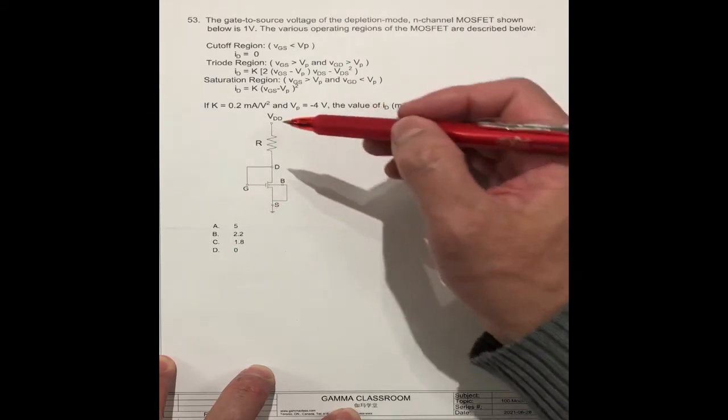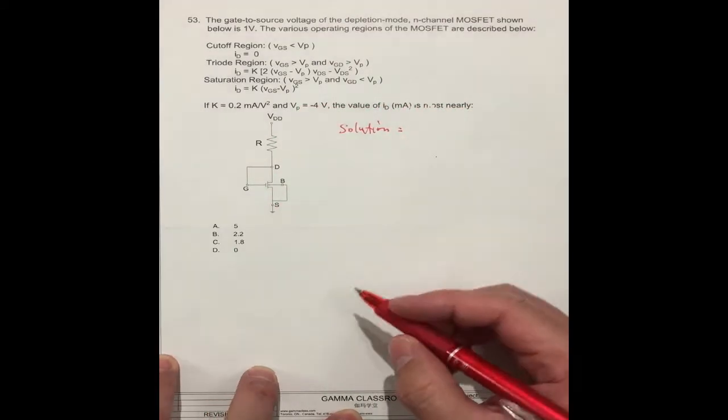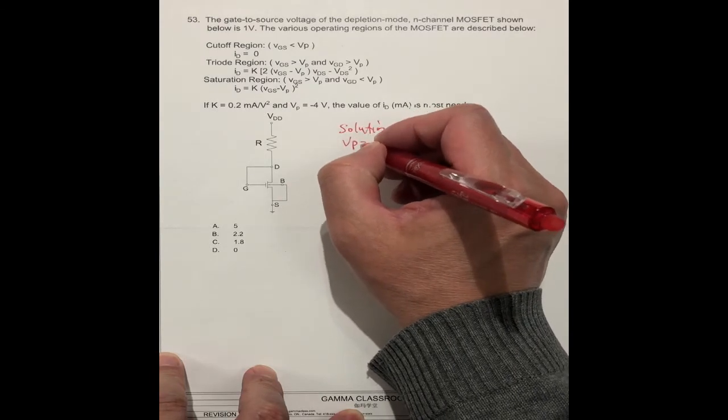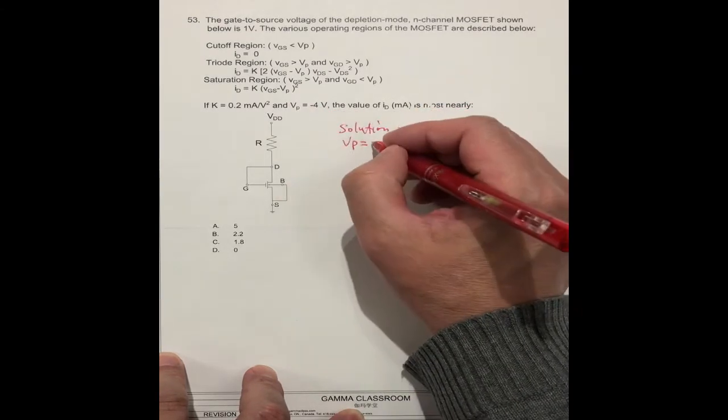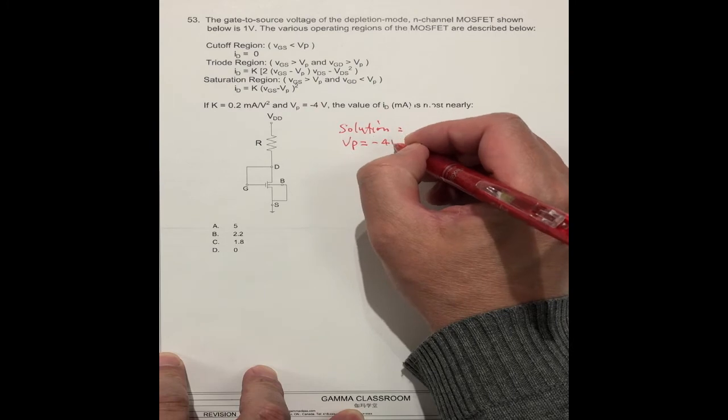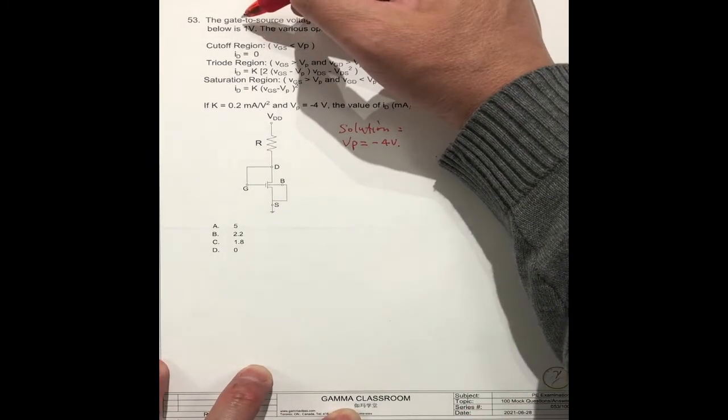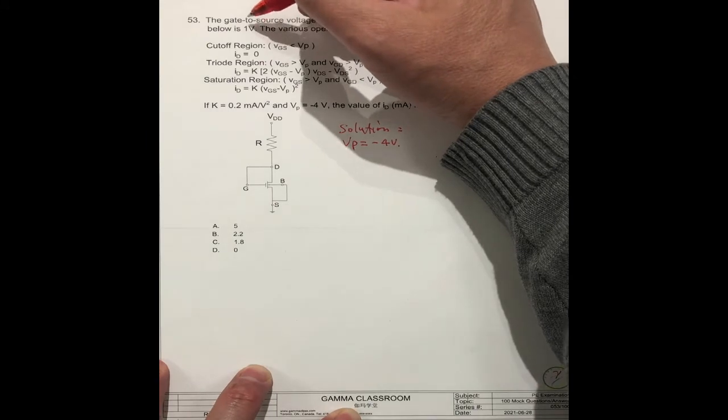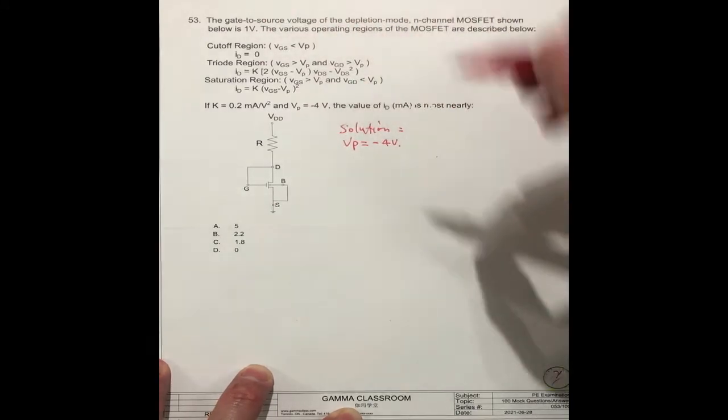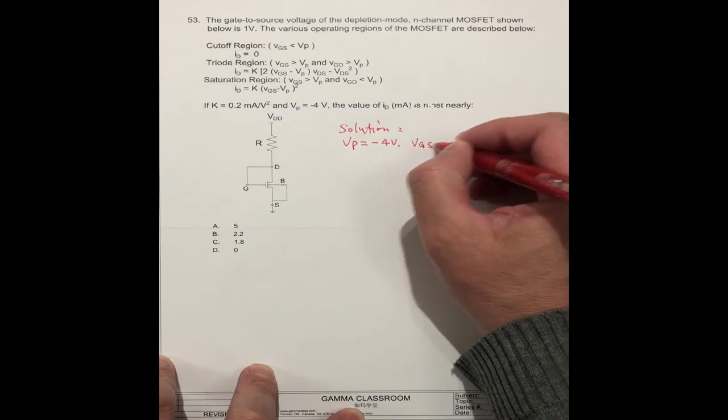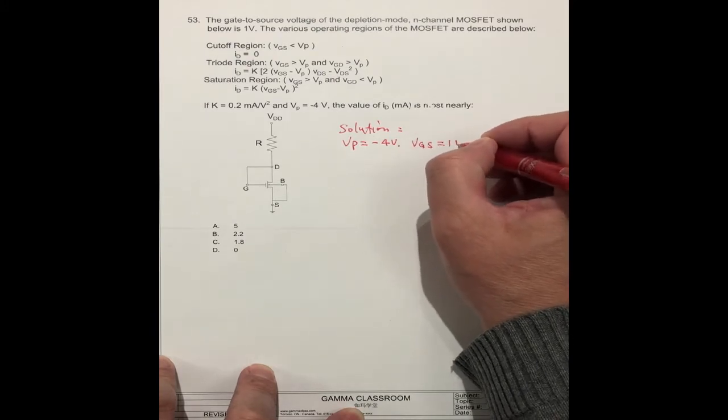For example, you find VP, the first one. VP, what number? Here already shown is minus 4 volts. And VGS equal to 1 volt.